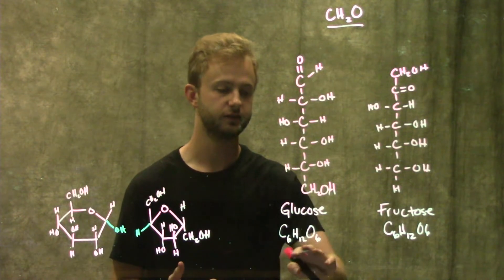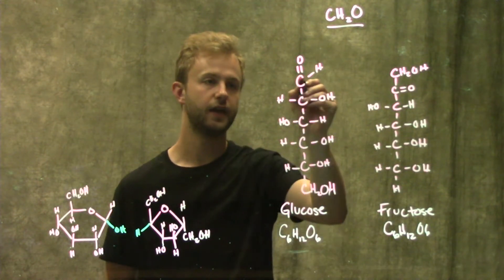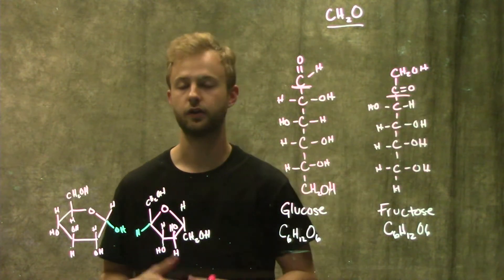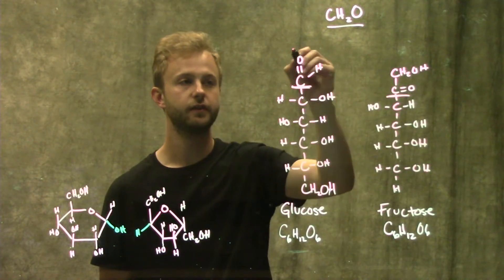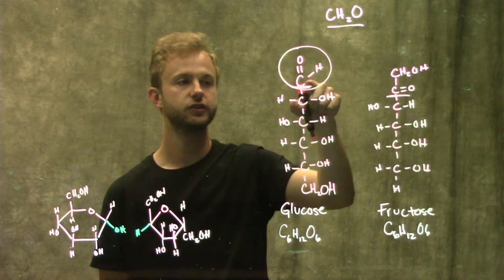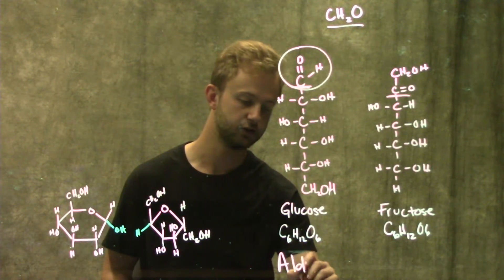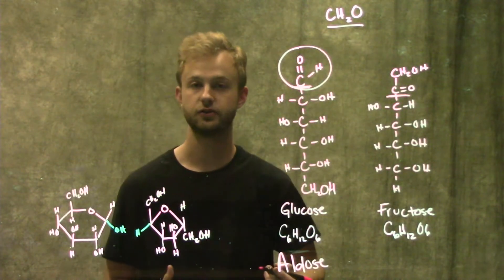Some other properties of these two monosaccharides is that they both have a carbonyl carbon, which we learned from our video on functional groups. When you have this group right here with a hydrogen attached to that carbon, that's called an aldehyde, which makes glucose an aldose. Any sugars that have this group on the end are going to be an aldose.